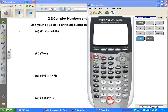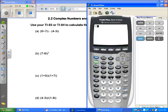Our first example is (6+7i) - (4-3i). So I'm just going to put in just how it looks there. So again, to get the i hit second and then my decimal point.